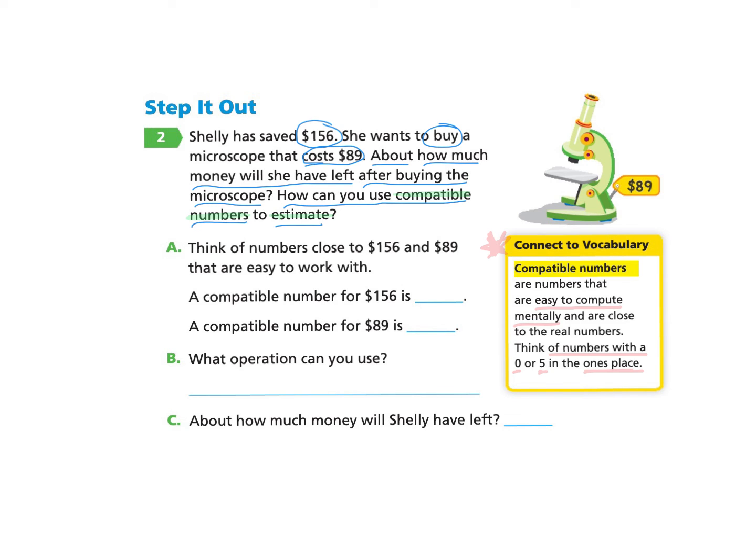And again, their hint to us is to think of numbers that have a 0 or a 5 in the ones place. So you can pause and come back. So a compatible number for 156 would be 150. I took that ones column and I made that into a 0. A compatible number for 89 would be 90. Again, notice that my ones column is now a 0 and before it was a 9.